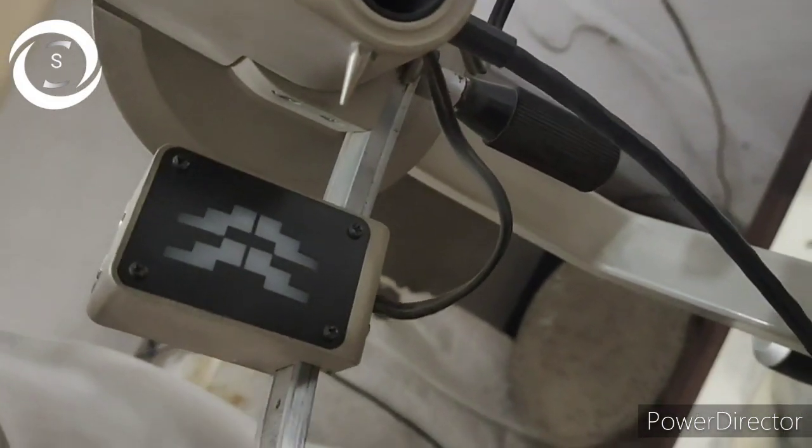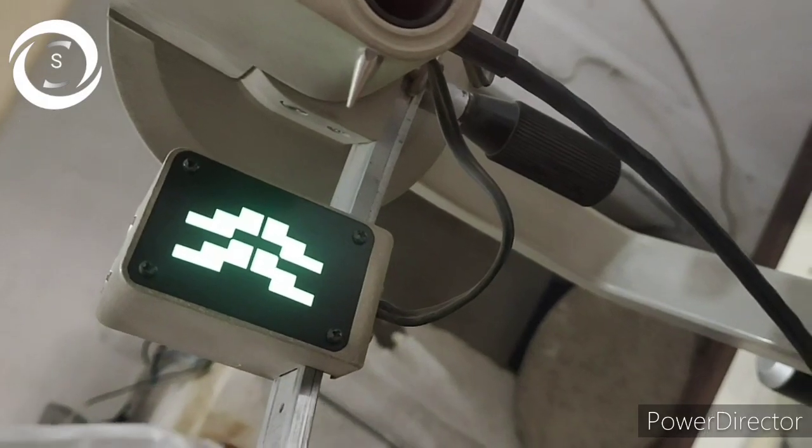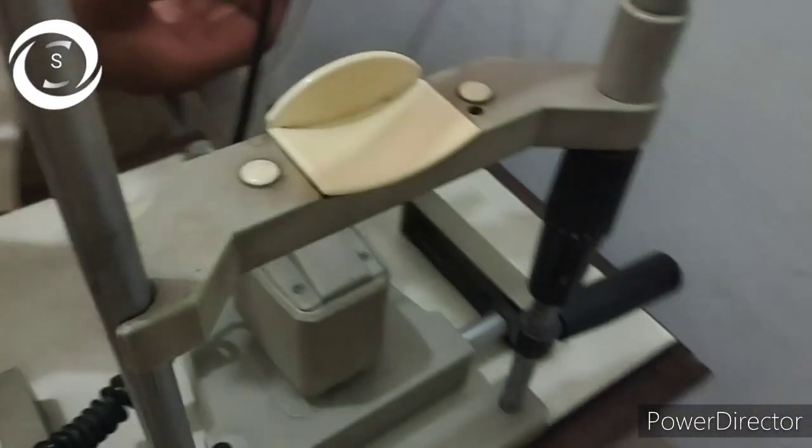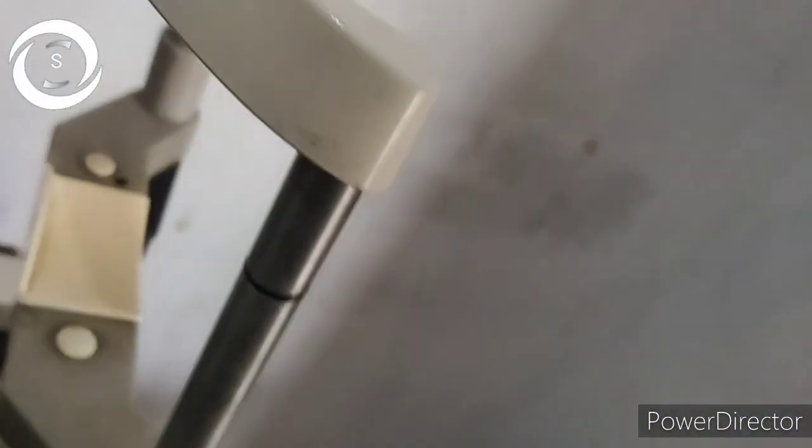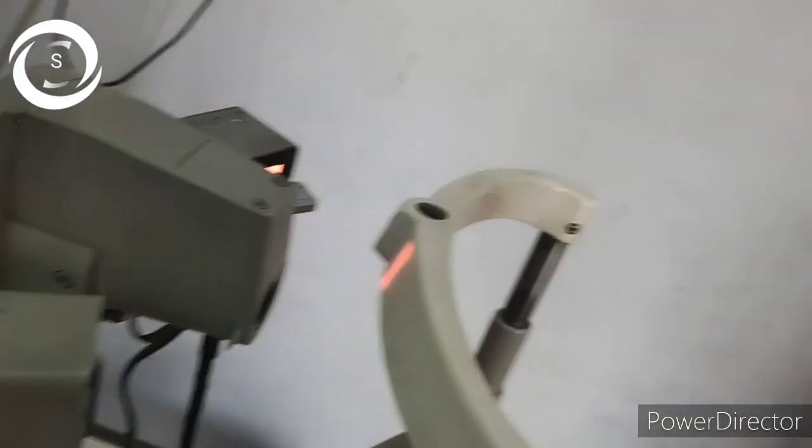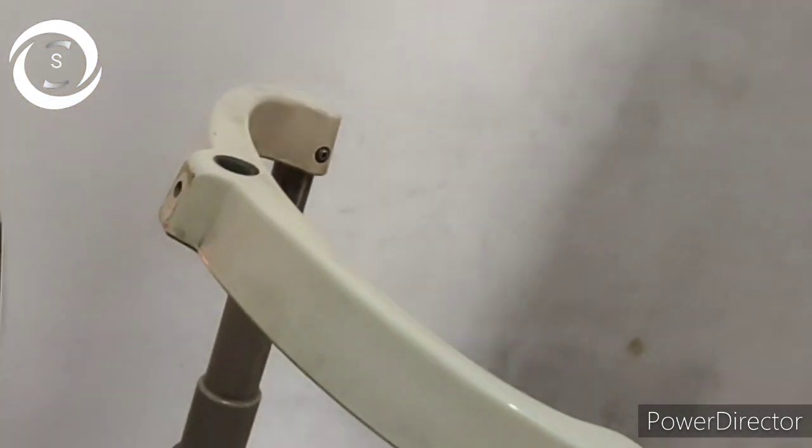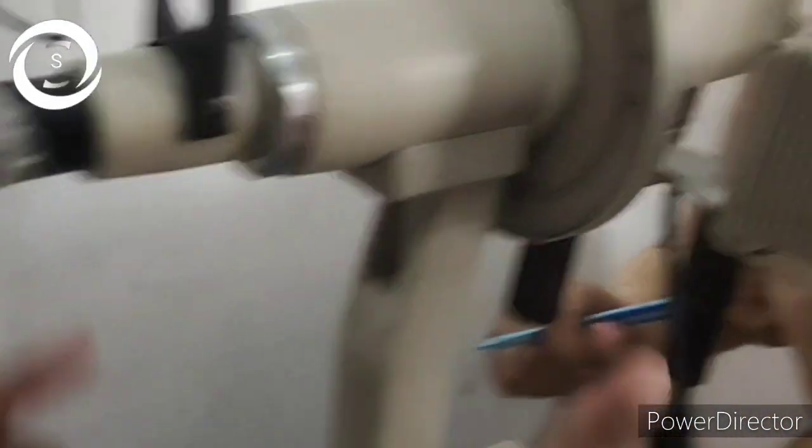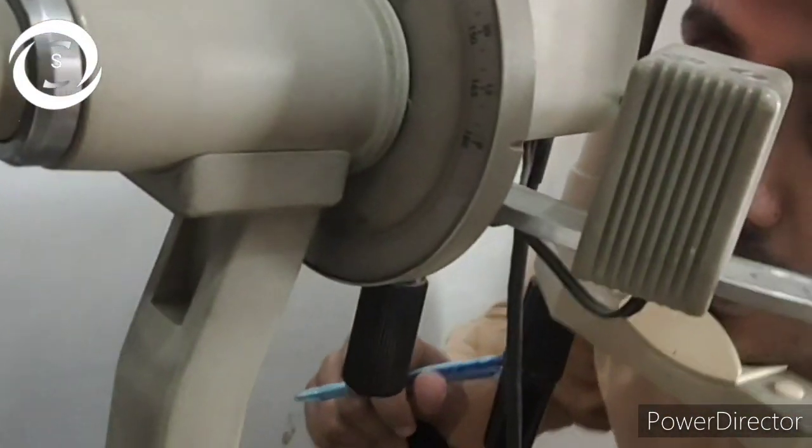You can see this image is displayed. Now we have switched on the Javal-Schiotz and we project the red box and the green astronaut on the cornea and then we focus the image through eyepiece on the cornea and we align these two objects. You have to align these two objects and then you have to read the diopteric power from the dial superiorly and the axis. Now you have to take two readings separately because Javal-Schiotz measures one meridian at a time, so for K1 we keep the dial at 90 degrees.